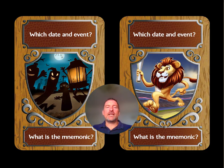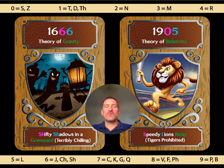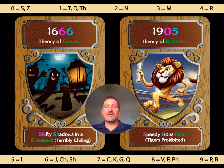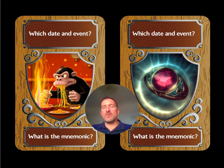Here are the two images for those two events. Can you remember the mnemonic phrases? You've got a spooky graveyard on one side and a lion doing a relay on the other. 'Shifty shadows in a graveyard' — SH and SH give you 66 — and 'speedy lions relay' — S gives you 0 and L gives you 5, for 1905. Here are two more from before: can you remember the mnemonic phrases for the chimp eating spaghetti and the ruby ring?